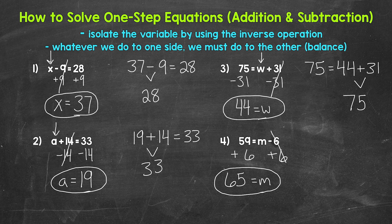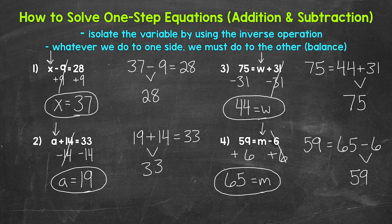Let's check it by plugging 65 in for M. So we have 59 equals 65 minus 6. 65 minus 6 is 59, so we are correct. M equals 65. So there's our addition and subtraction section. Let's move on to multiplication and division.